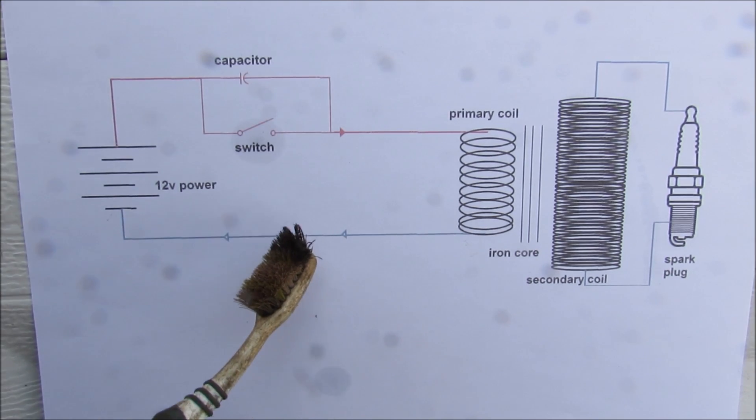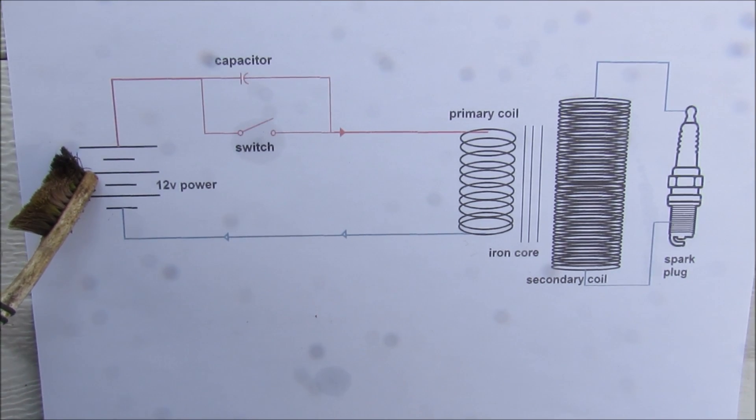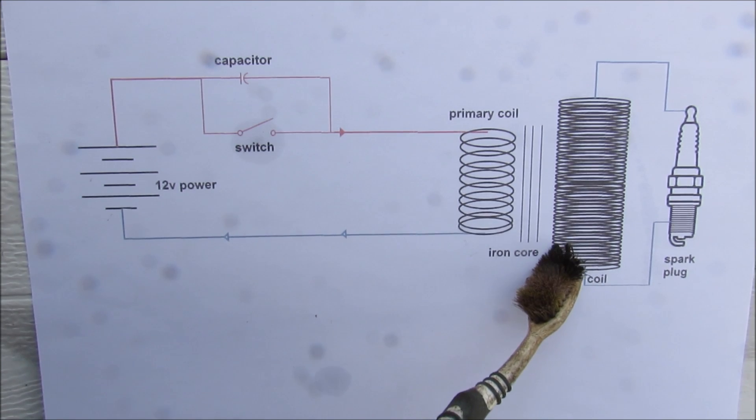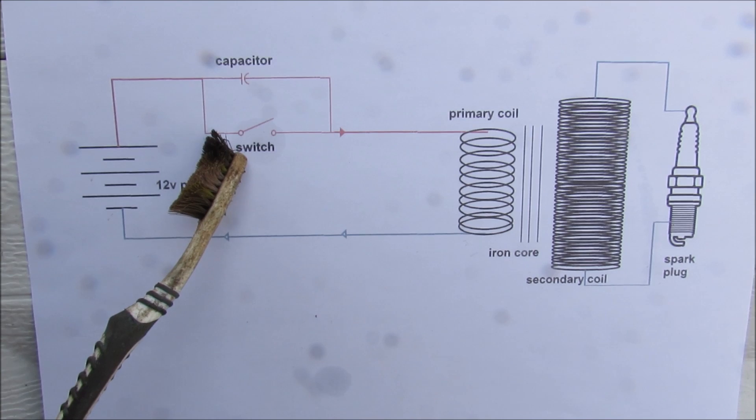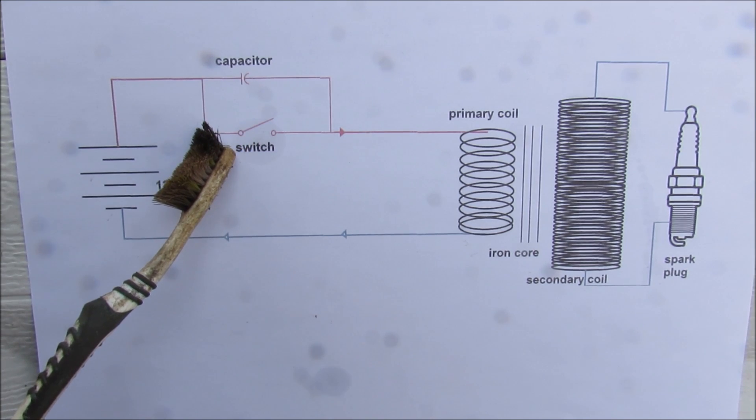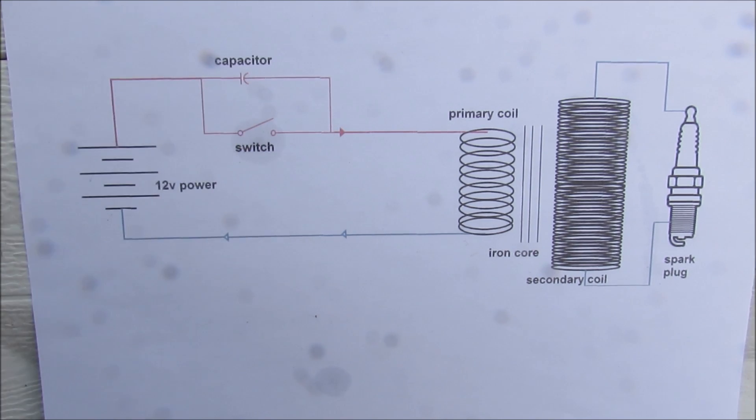Now an overview of how your ignition coil works is you've got this 12 volt power source that powers the ignition coil over here and that powers the spark plug. Now this is all controlled by this switch here which on older vehicles is the distributor and on newer vehicles it's powered by the ECU.